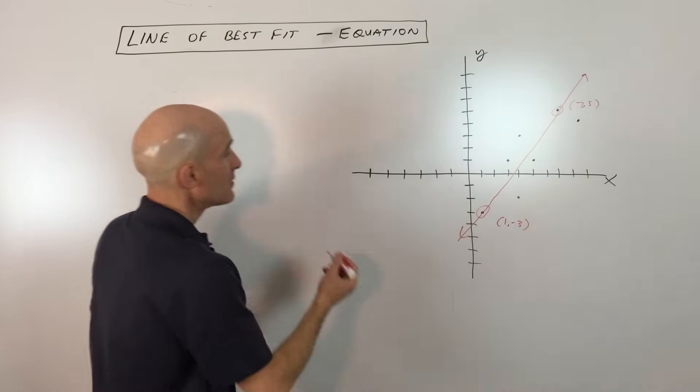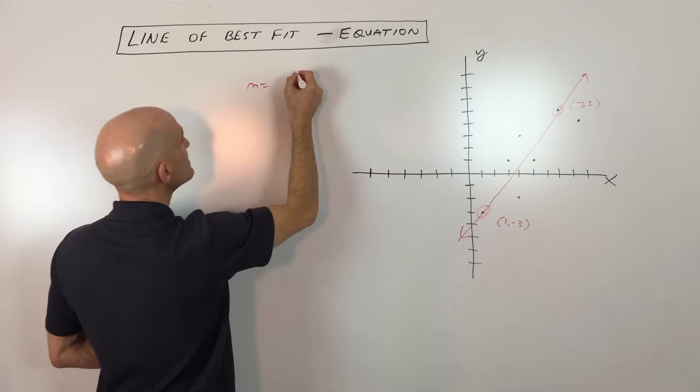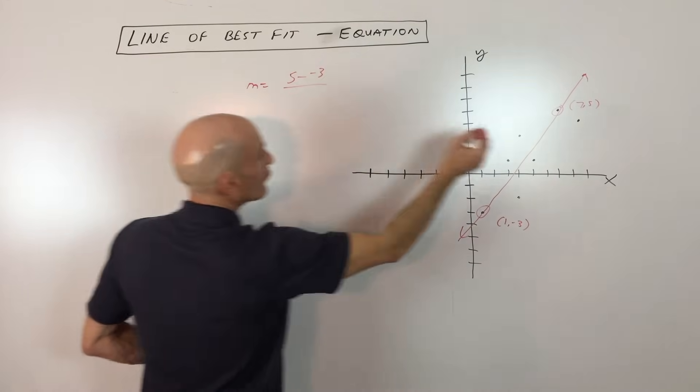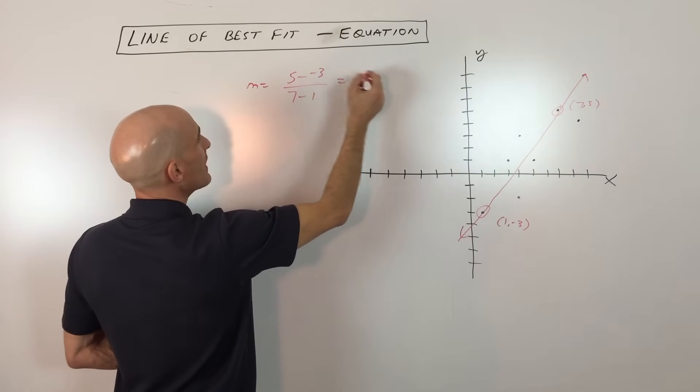Okay so what we're going to do now is we're going to find the slope, so we're going to use our slope formula y2 minus y1 over x2 minus x1. That's five minus negative three over x2 minus x1, that's seven minus one, so that gives us six and this gives us eight which equals four thirds.